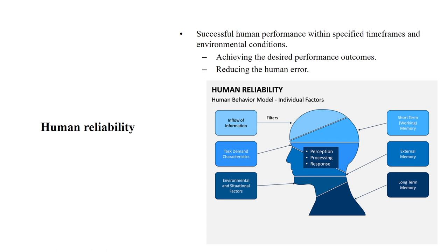When somebody is operating and interacting with a particular machine or many machines and peers like other operators, there will be inflow of information to the brain, there will be task demand, and there will also be some environmental and situational factors. When I am working in the morning versus the evening, situations are not exactly the same. For example, if I am taking a class and somebody knocks the door to ask for something, that is a situation — how do we react to it?